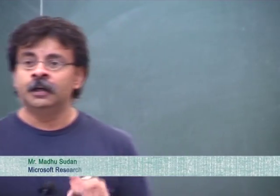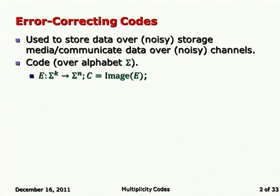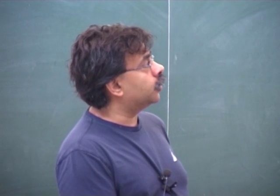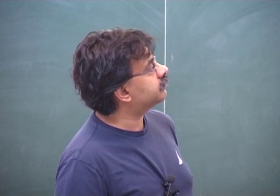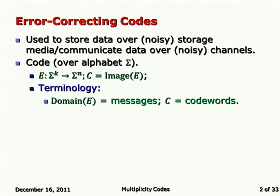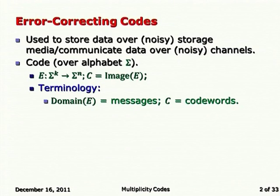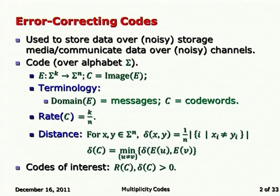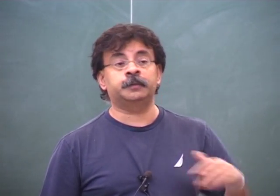Let me start with a very gentle introduction to error correcting codes. These are combinatorial objects that we use to store and recover information in the presence of noise. There is an encoding function which takes some message — the domain of this encoding function is what we call the set of messages. This encoding function takes the set of messages as an injective map, going into a much larger space where n is much larger than k. The set of things you map to — the ones that actually have pre-images — are what we call the codewords.